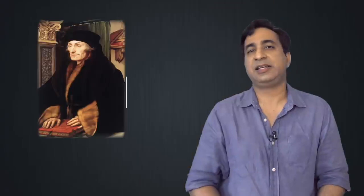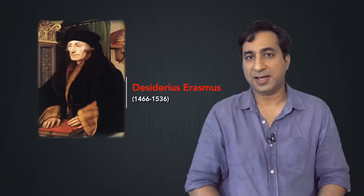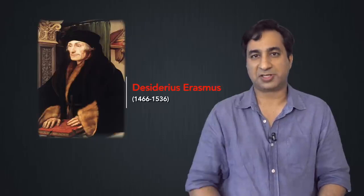A second great figure of the Renaissance is Desiderius Erasmus, who was born in 1466 and passed away in 1536. He was a Dutch priest and is considered the crowning glory of Christian humanists. He wanted the Bible to be translated into all the local languages of Europe, into the local vernacular.